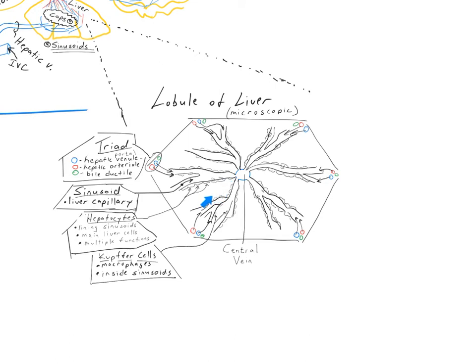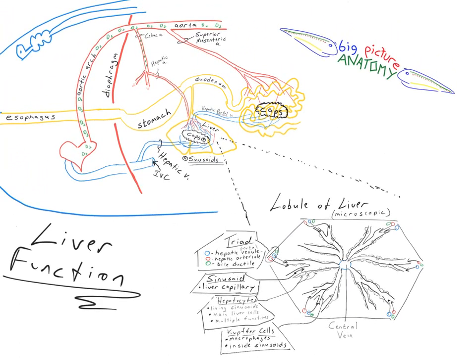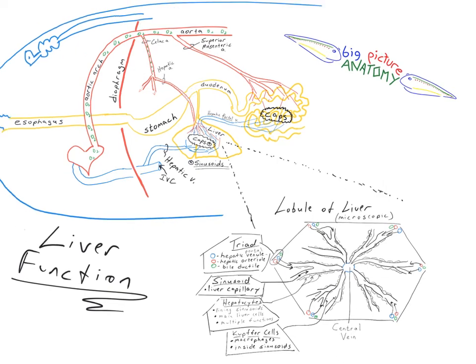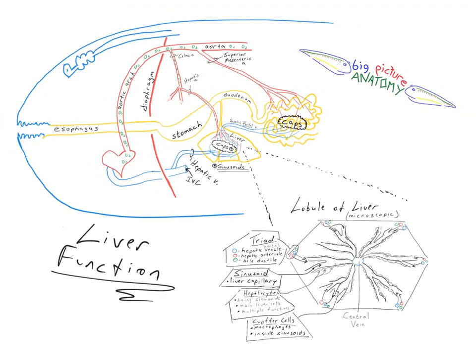The bile travels through tiny canaliculi back to the third member of the triad, the bile duct, where it all converges. It is then temporarily stored in the gallbladder and sent back to the duodenum through the common bile duct. That is the story of liver function from big picture anatomy.